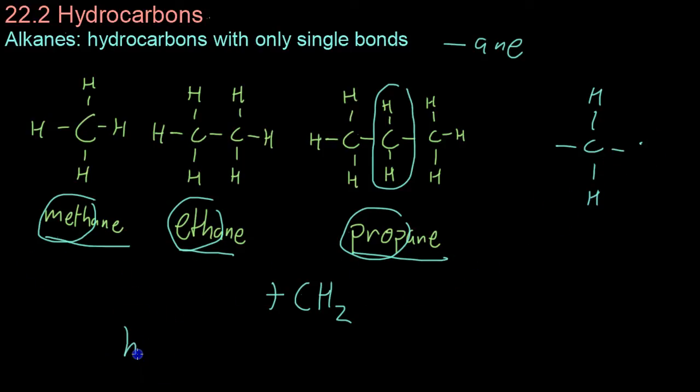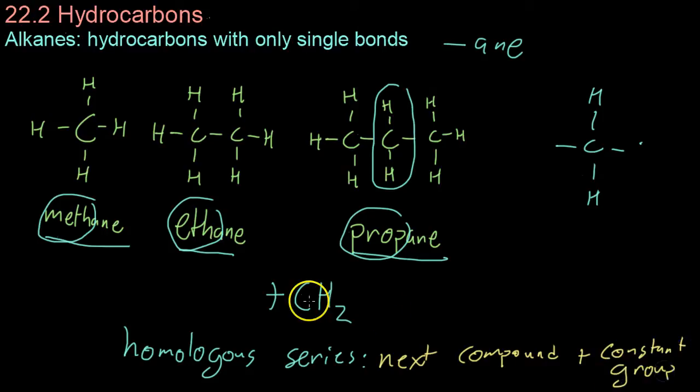So, the alkanes are what are known as a homologous series. And now, a homologous series is just a compound in which you get the next compound by adding a constant group. In this case, that constant group is the CH2 group. So, to know all the elements in a homologous series, you don't have to memorize their formulas individually. For example, the CH4, the C2H6, the C3H8, etc.